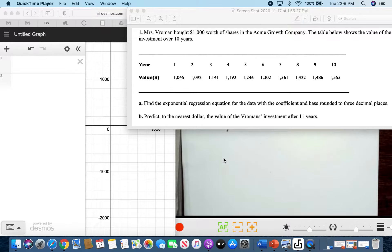This is about exponential regression and its application to certain life situations. Mrs. Broman bought $1,000 worth of shares in the Acme Growth Company. The table below shows the value of the investment over 10 years, with the year number and values in dollars, like from 2000 to 2010.